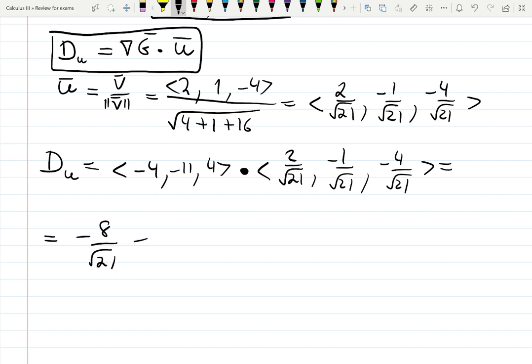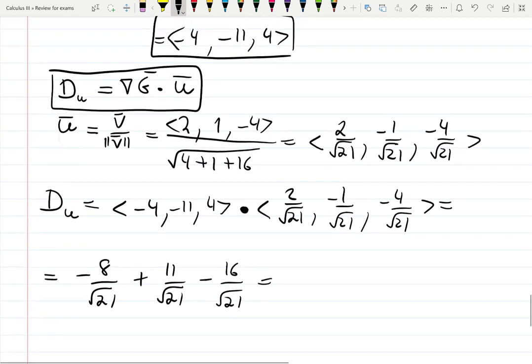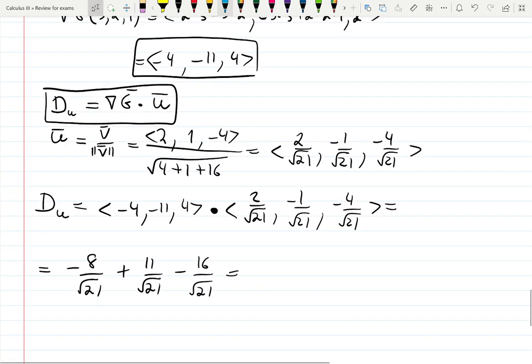-4 times 2 is -8 over √21, minus times minus gives you plus, but wait, this is a mistake I can see. This should be positive 1, I'm not sure why I put minus there. So this should be -8/√21 + 11/√21 - 16/√21, which equals -35/√21. This is the first answer for part (a).